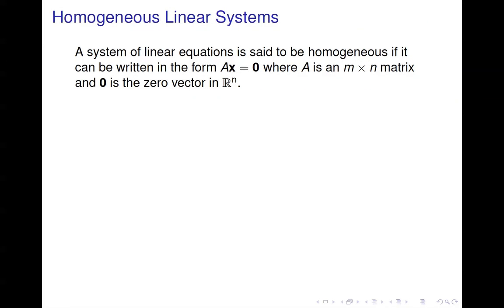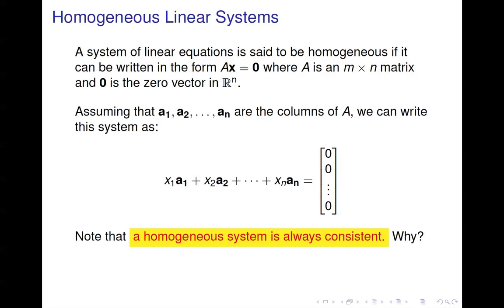Today we're going to talk about homogeneous linear systems. A homogeneous linear system is simply one in which the right-hand side is the zero vector — just a vector of all zeros. Another way to look at it: if we look at A times X as a linear combination of the columns of A, as in X1A1 plus X2A2 plus dot dot dot XnAn, we want that to equal the zero vector.